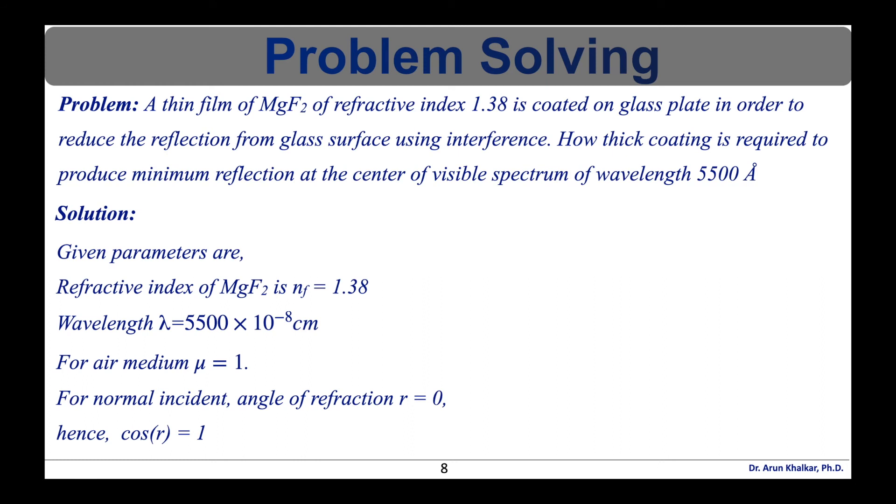The solution for this problem is as follows. We have given parameters: refractive index of MgF2 is nf is equal to 1.38, wavelength of the light is 5500 into 10 raised to minus 8 centimeter, for air medium refractive index is equal to 1. Let's say for normal incident angle of refraction r is equal to 0 hence cos of r that is cos of 0 is equal to 1.